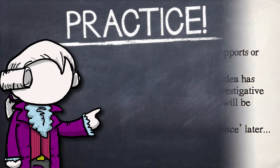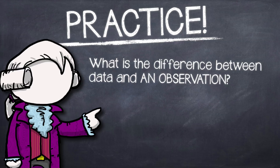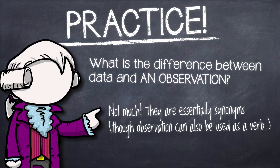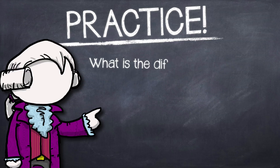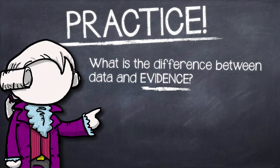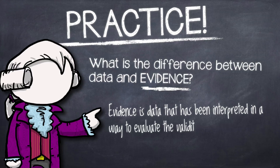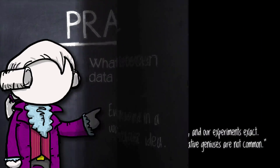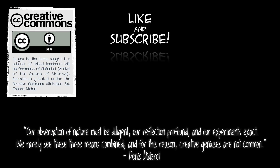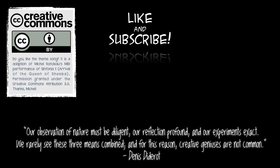Let's practice. What is the difference between data and observation? Really not much — they're pretty much synonyms. Let me know if I'm wrong about that. And what's the difference between data and evidence? Evidence is data that's been interpreted to either validate or refute a scientific idea. Anyway, that's the first video in my revamped Nature of Science series. Please throw some comments down with things that I need to change or fix. If you like what you see here, let me know. Thanks for watching and have a great day.